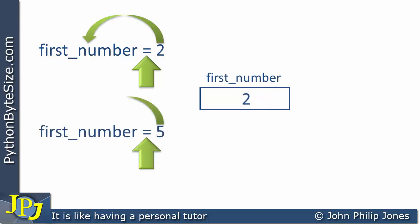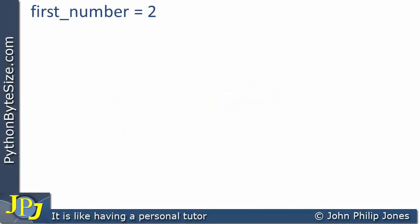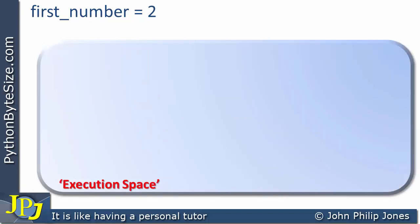Here we can see 2 being assigned, then 5 being assigned, and it looks like the 2 was overwritten by the 5. What we need to do is have a different look at how variables are created and manipulated within Python. When first_number is assigned 2, we need to realize that in Python, 2 is an object — it is an integer object — and first_number is the name that's bound to the integer object that contains 2.